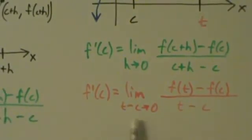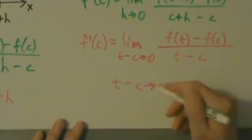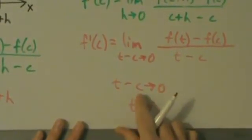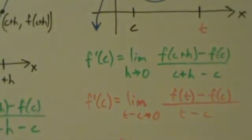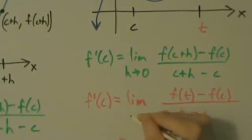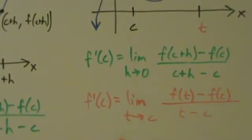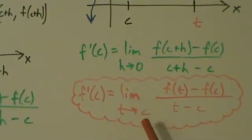There's one more thing we have to do. Saying t minus c going to zero is a goofy way to put it. If t minus c is going to zero, we just add c to both sides, and we get t going to c. So really we say the limit as t approaches c — not as t minus c goes to zero. And this is the alternate definition of the derivative at a point: f prime of c equals the limit as t goes to c of f of t minus f of c divided by t minus c.